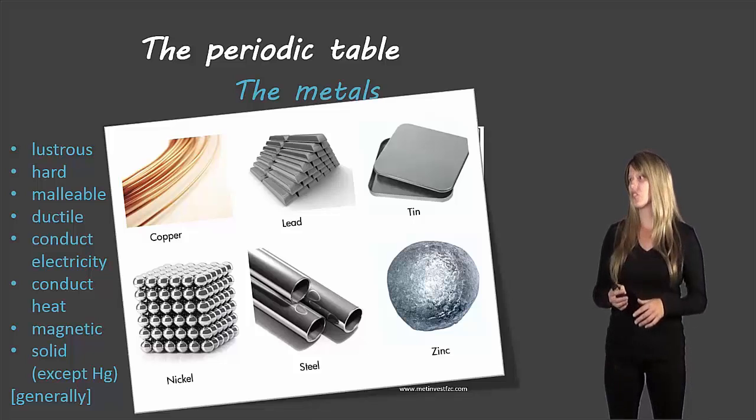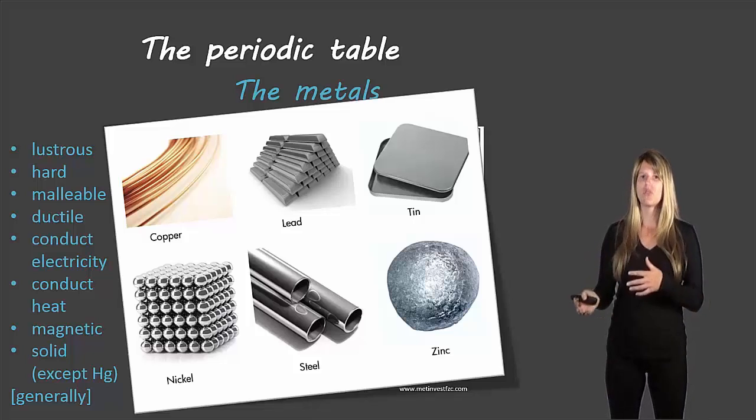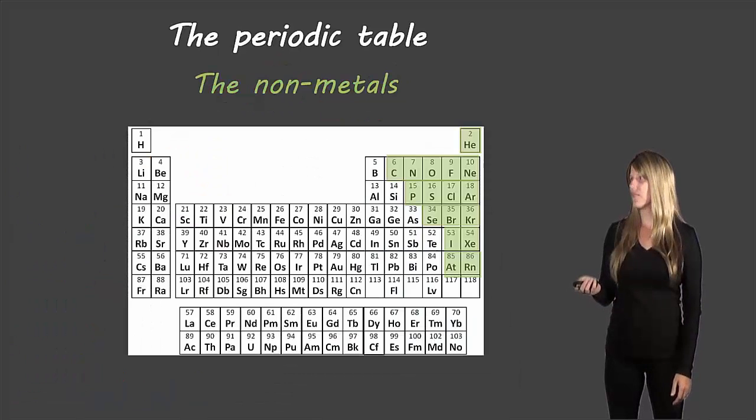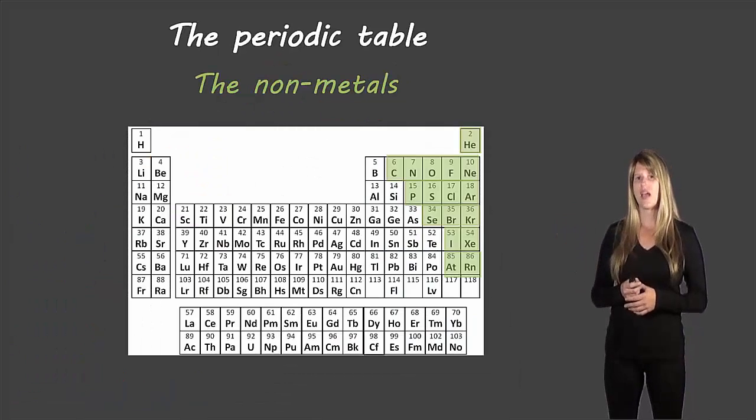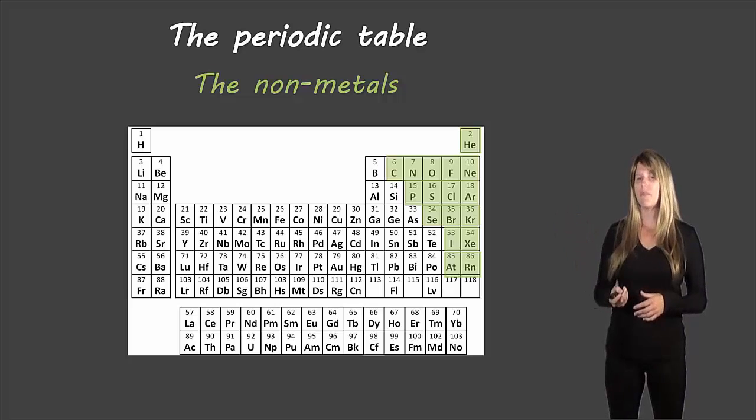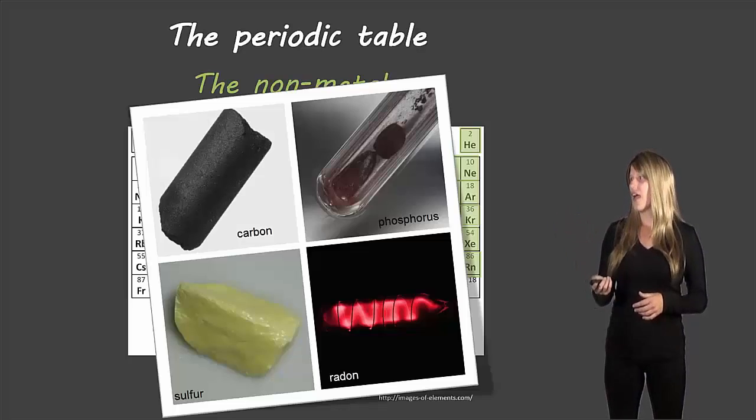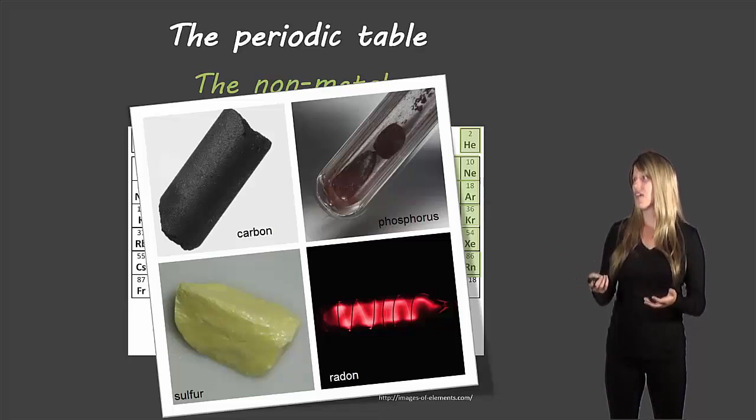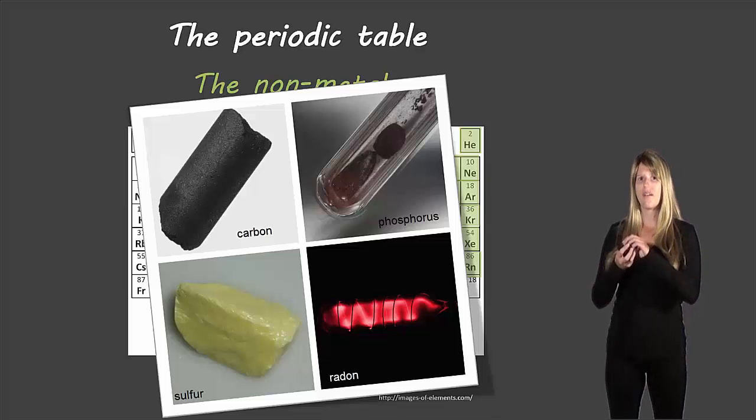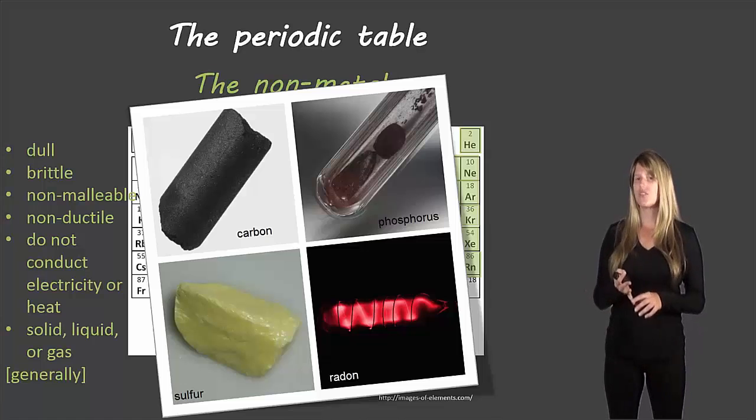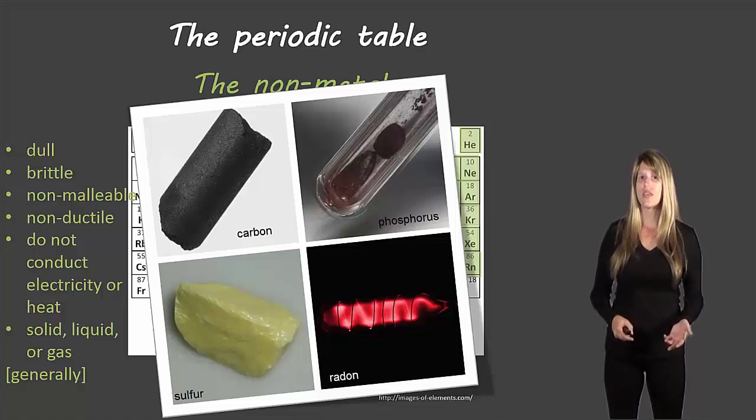Next are the non-metals. These are on the right side of the periodic table. There are much fewer non-metals than there are metals. These are some examples - you can see they all look very different from each other. There are gases, solids, crumbly solids, more formed solids, different colors. Here are some of their characteristics: they're usually dull, brittle, non-malleable, non-ductile. They don't conduct heat or electricity, and they could be solid, liquid, or gas.